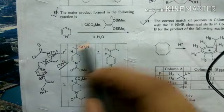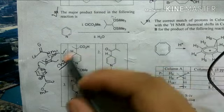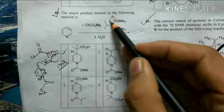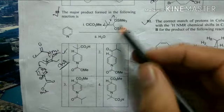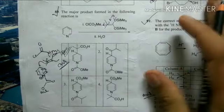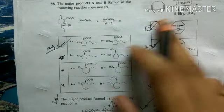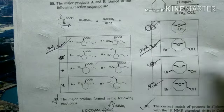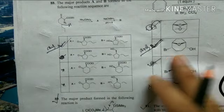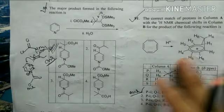The next reaction involves nitrogen attacking first to form an acetate compound, followed by nucleophilic attack, and finally hydrolysis to give a carboxylic acid — option 1 is the correct answer. After that, the sequence involves first epoxidation and then bromination, giving the final product option 2.